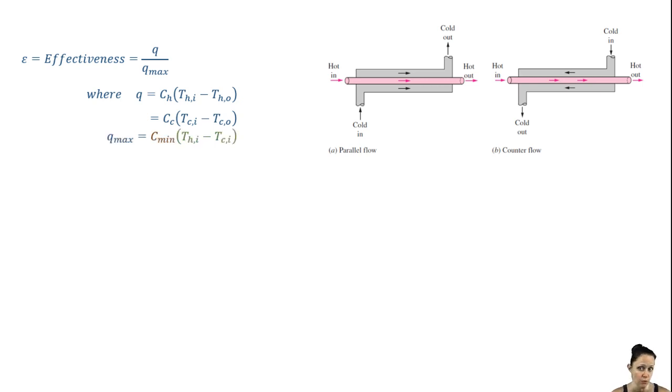The maximum possible heat transfer rate is given by C min times the temperature of the hot fluid at the inlet minus the temperature of the cold fluid at the inlet. That would be the case if the hot stream was cooled down to the temperature of the cold stream at the inlet.